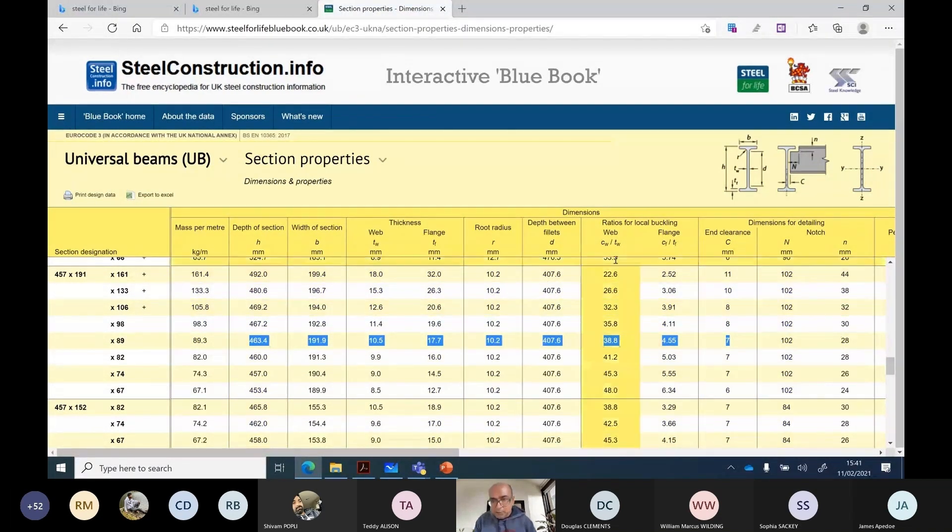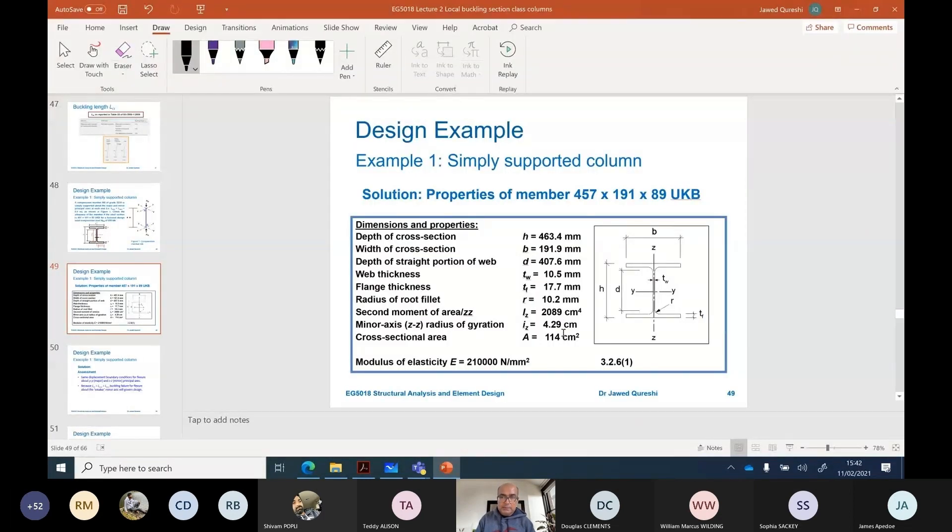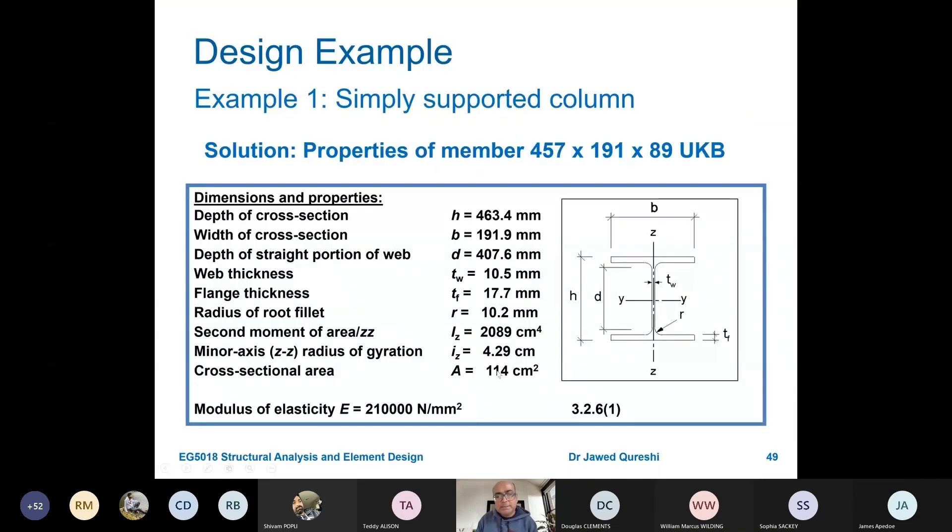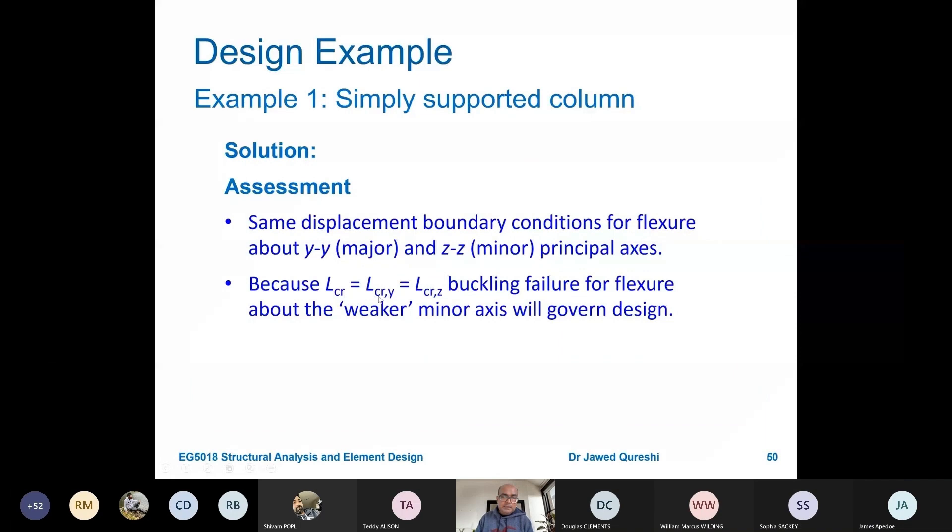So all of these properties come from here. You can see depth of the section, root radius. Note that we have C_W over T_W, C_F over T_F is given. But for our exercises or designs you will work it out. When you are working in a design office you can simply use it from here. But it's useful that you compare your results with this. I want you to notice two things here. One is area here is in centimeter square, so always convert it into millimeter square. I_Z is in centimeter, so always convert it into millimeter. And second moment of area is in centimeter to the power four, so always convert into millimeter to the power four. LCR is equal to LCR_Y and Z, but we will consider the weaker axis which is the minor axis, and in our case it is ZZ axis.